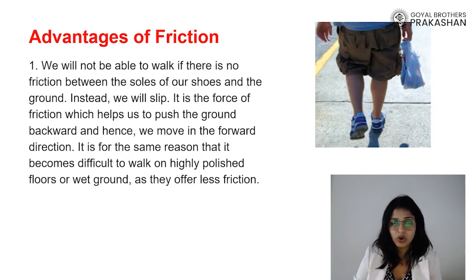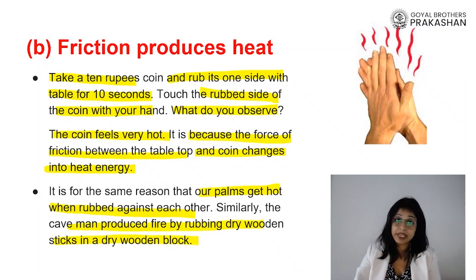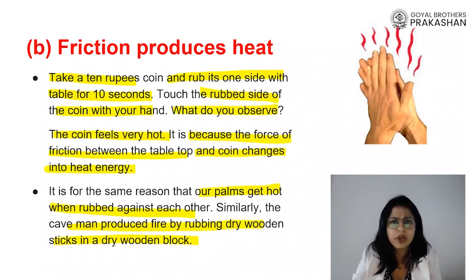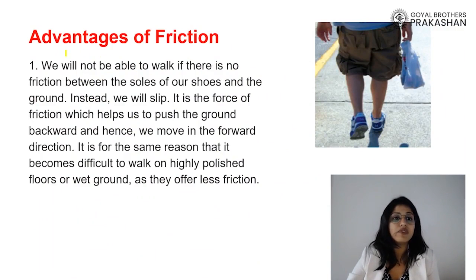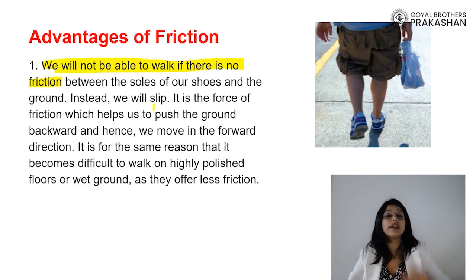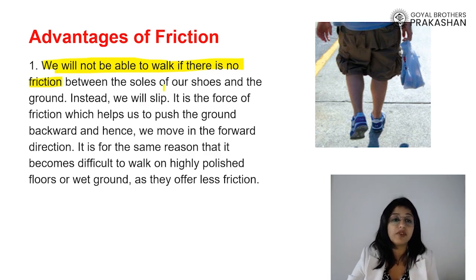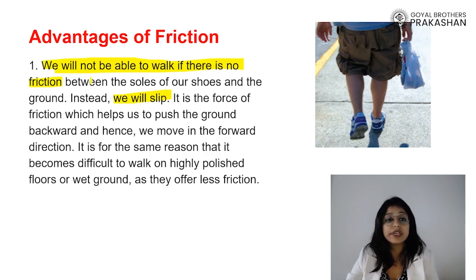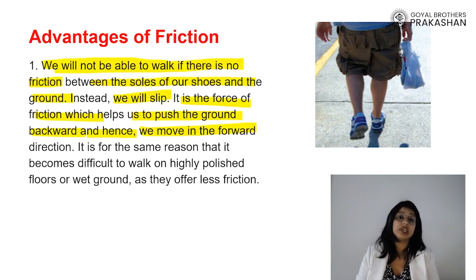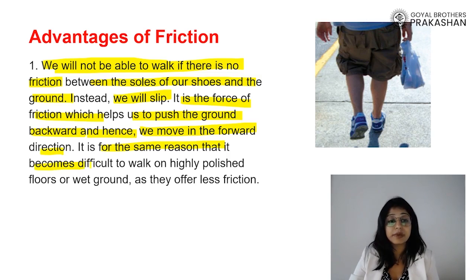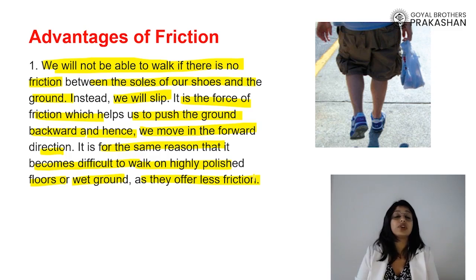Now let's look at the advantages of friction. If there were no friction on earth, it would be impossible to walk. We are able to walk and stand because the frictional force acts as an opposing force — without it we would be slipping all the time. It is friction between the soles of our shoes and the ground that prevents slipping, and the force of friction allows us to push the ground backward and move forward. That is why it becomes very difficult to walk on a highly polished floor or wet ground, because those surfaces have less friction.